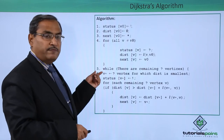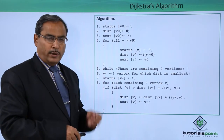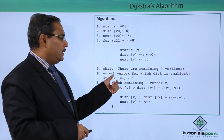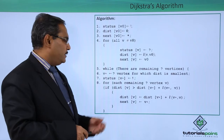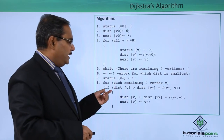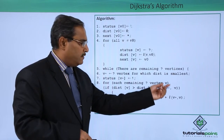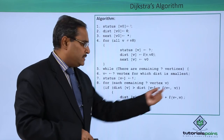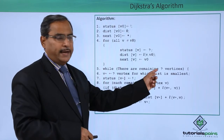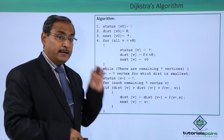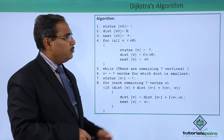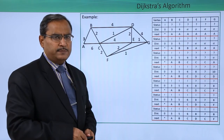Now we go to step 5: while there are remaining '?' (unconsidered) vertices, set v* equal to the '?' vertex with the smallest distance, then set status[v*] = '!'. For each remaining '?' vertex v, if dist[v] > dist[v*] + L(v*, v), then update dist[v] = dist[v*] + L(v*, v) and next[v] = v*. This loop repeats until no '?' vertices remain.